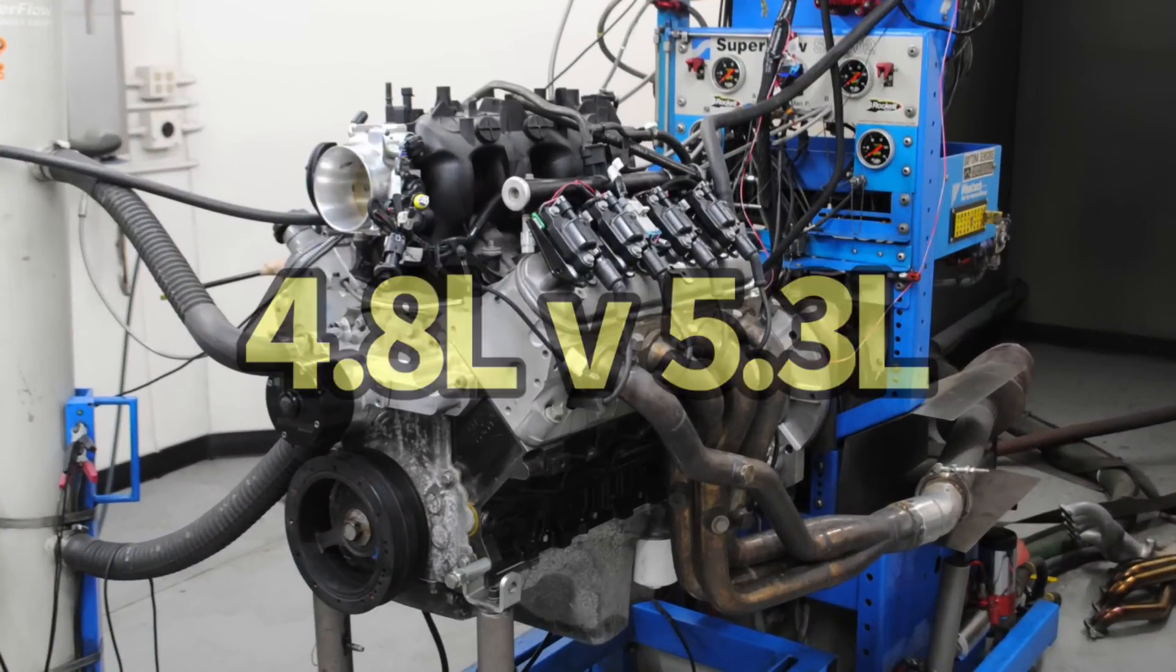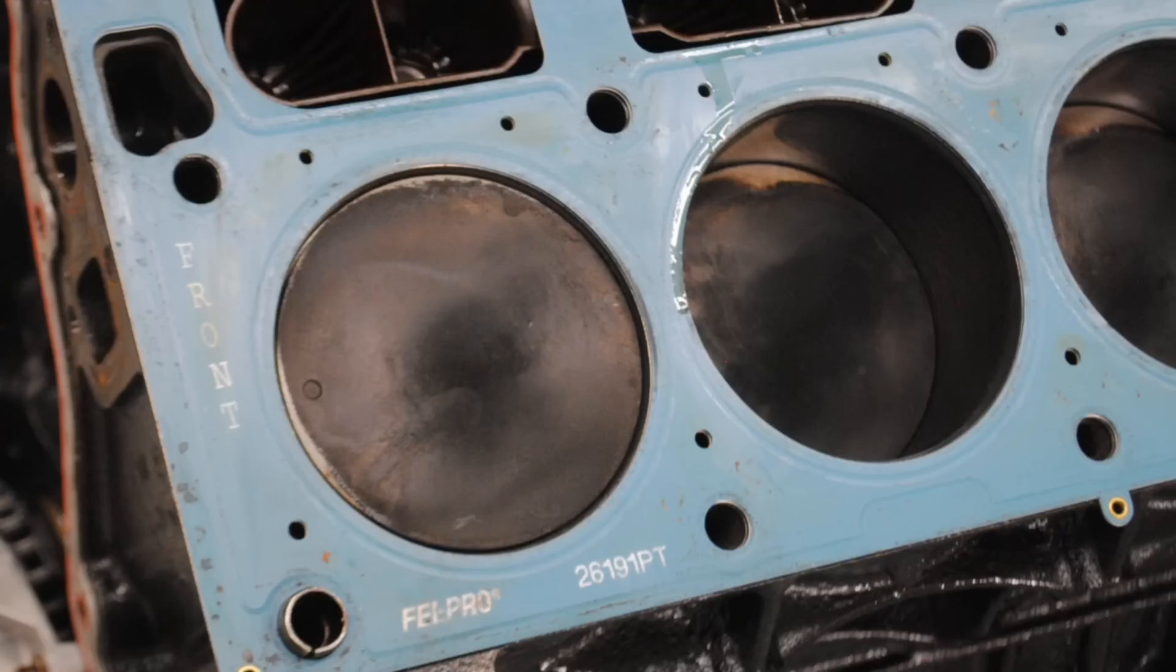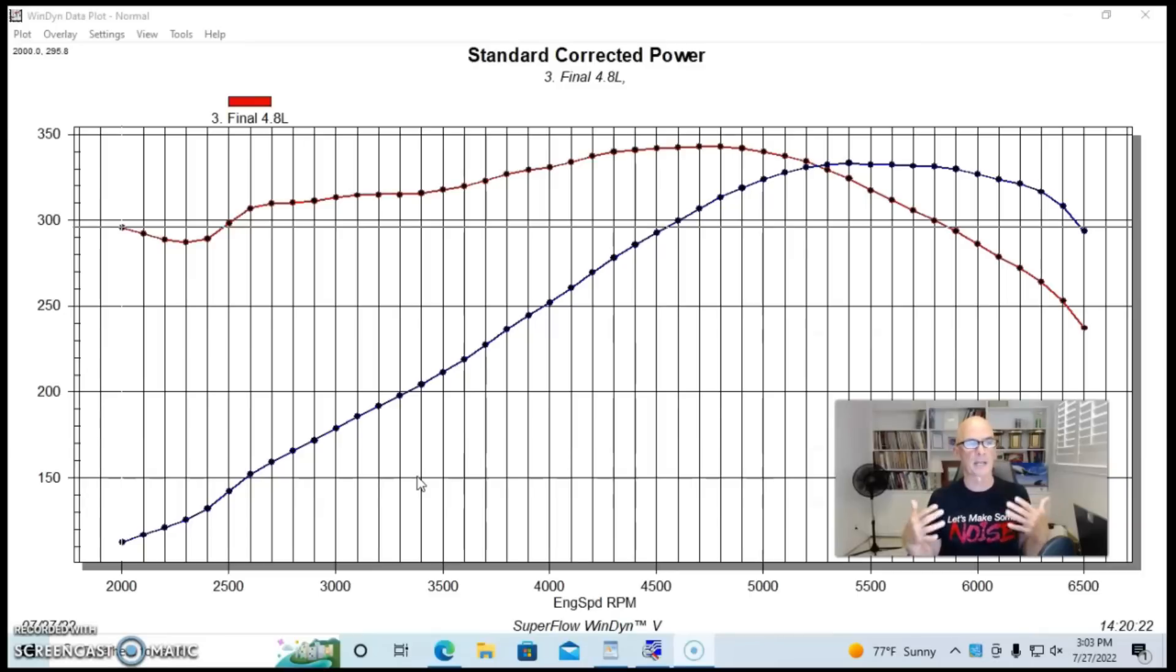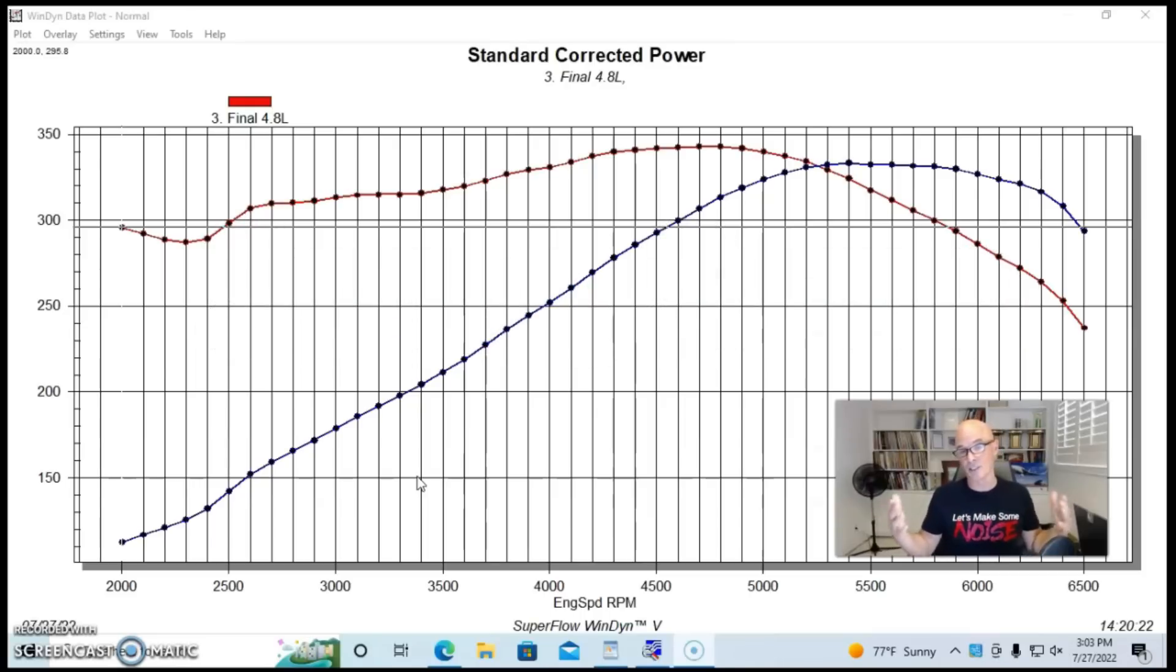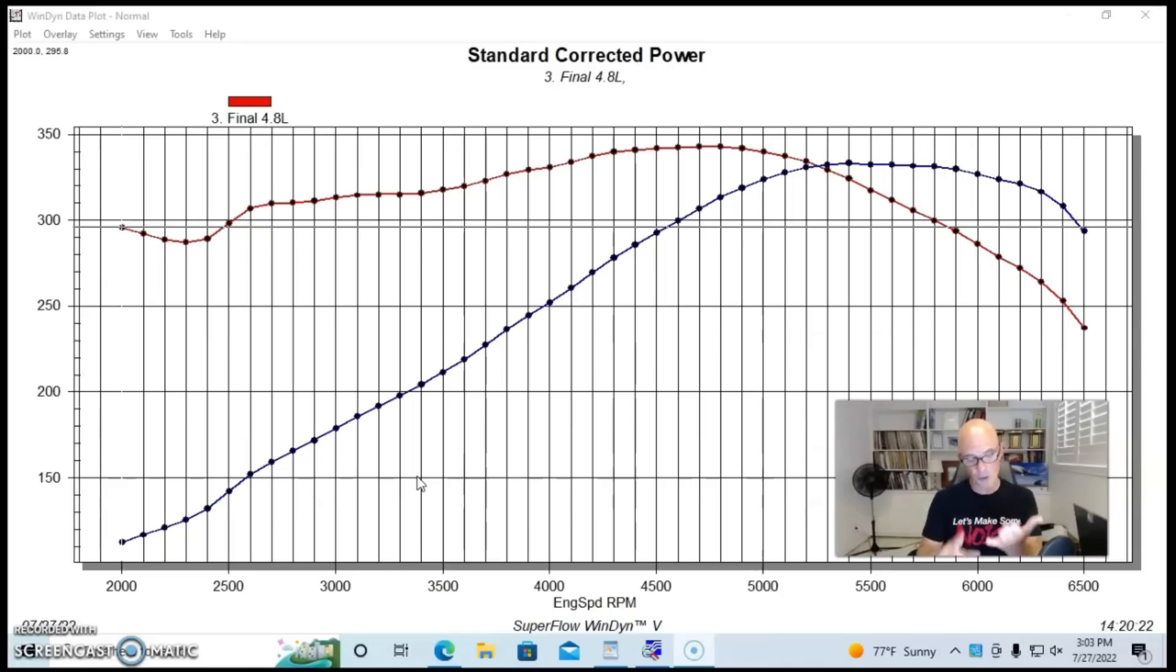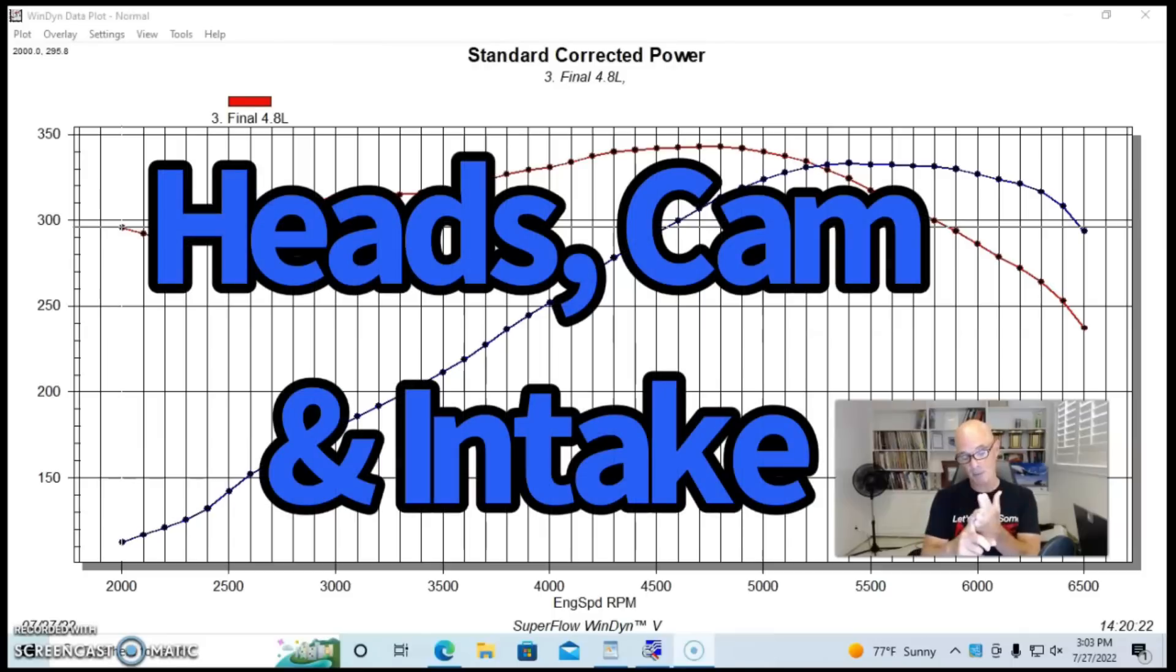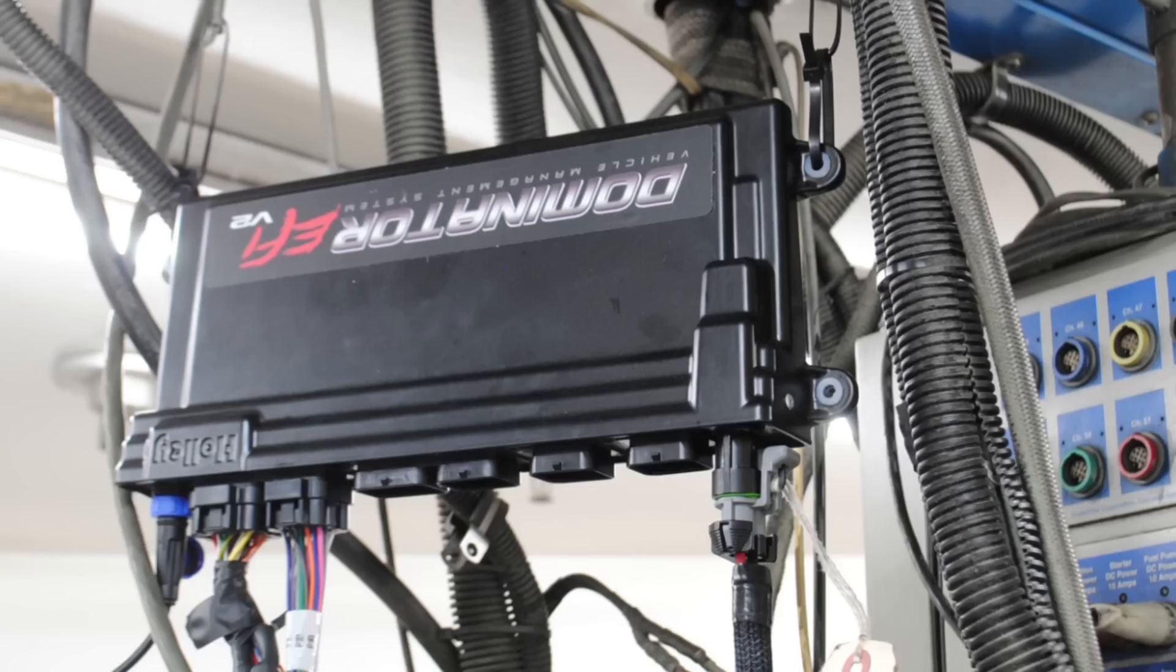To properly answer the question of what happens when we increase the displacement with no other changes, if we just go up in the size of the motor but keep the cam and the compression and the cylinder heads and the intake manifold, really the things that are responsible for making power, what happens if we just make a bigger motor but run those same things? I really have two examples, and this first one is very easy. This is actually just stock LS motors, because lucky for me, a 4.8 and a 5.3 use the same cylinder heads, the same camshaft, the same intake manifold.